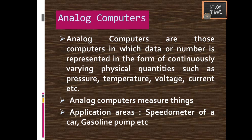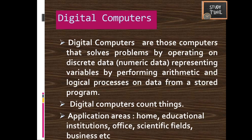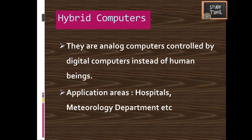Digital computers solve problems by operating on discrete data, performing arithmetic and logical processes on data from a stored program — they count things. They are used in homes, educational institutions, offices, scientific fields, and businesses. Hybrid computers are analog computers controlled by digital computers instead of human beings, and they are used in hospitals and meteorology departments.